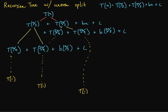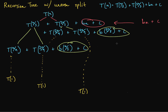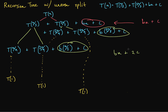So right here, at our zeroth level, we have bn plus c. What about the next level? We have a couple of things — this is all one level. So we have b times n/3 plus c, plus b times 2n/3 plus c. If we combine those — that's 1/3 and 2/3, which gives us bn — plus 2c.